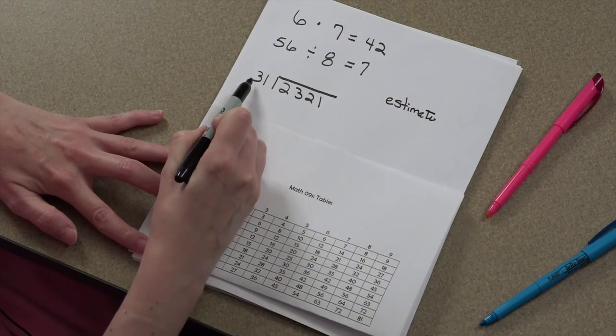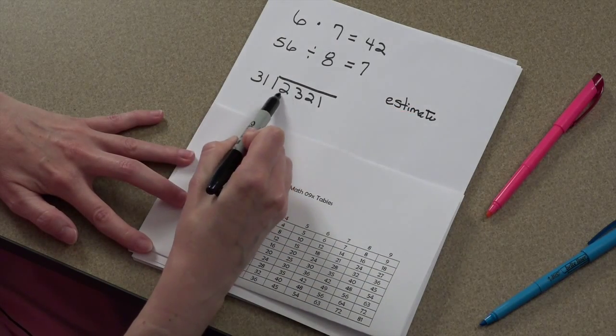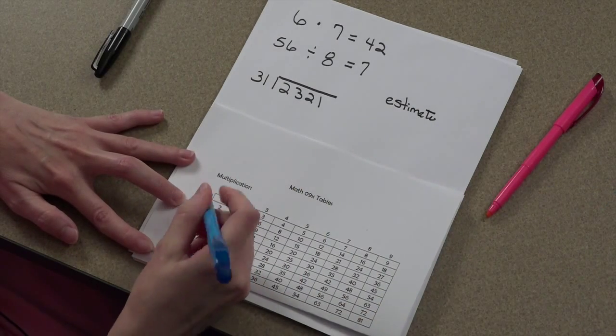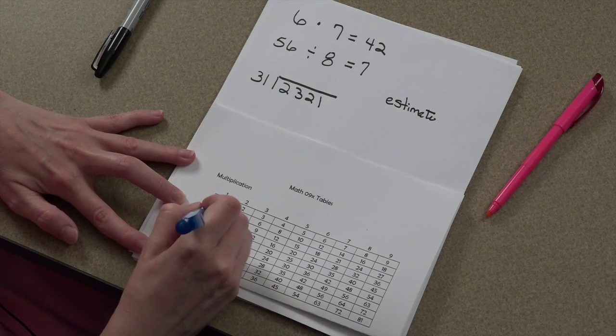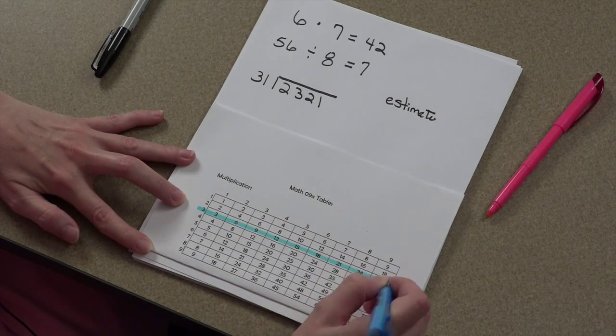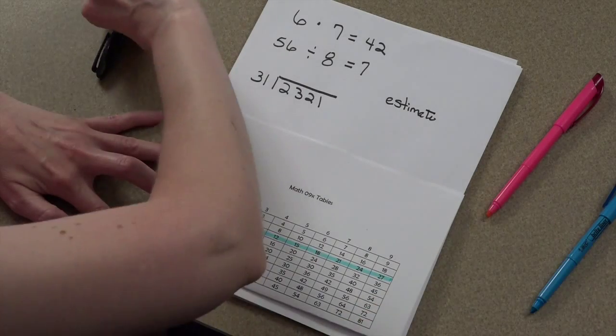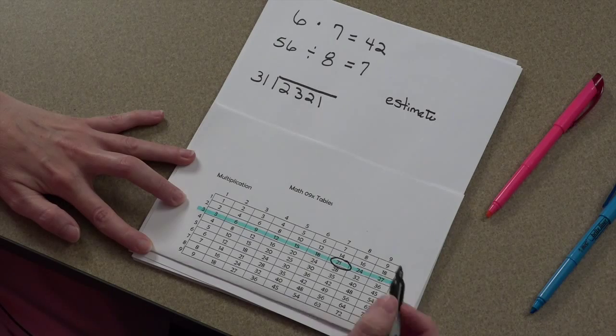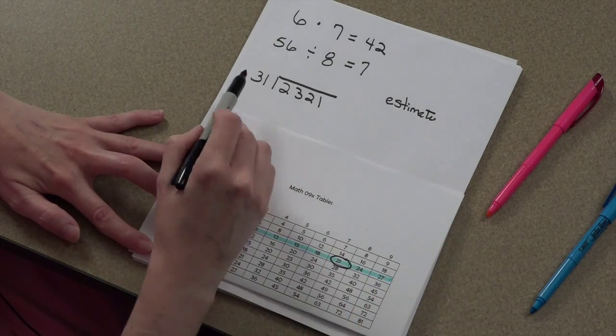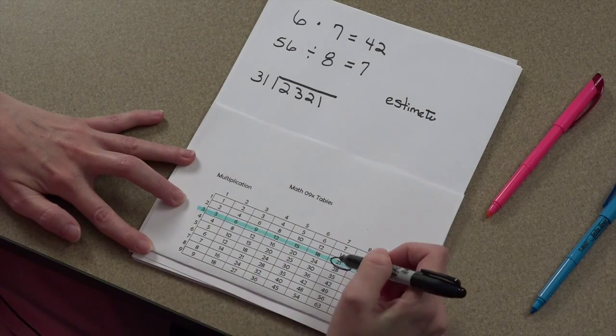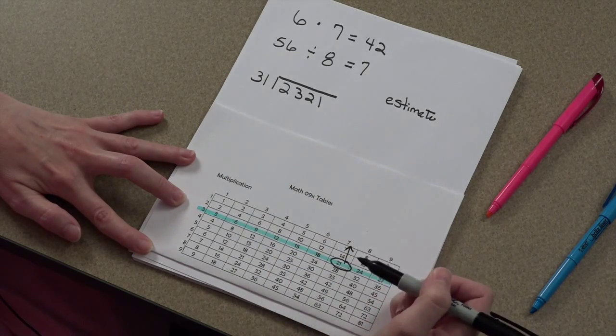How many times does 3 go into 23 without going over? Well, we can look. Here's our row 3. We're going straight across until we get to as close to 23 without going over. That's 21. So the estimate, 31 into 232, is about 7 times.